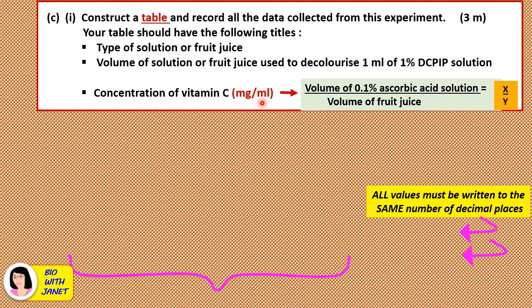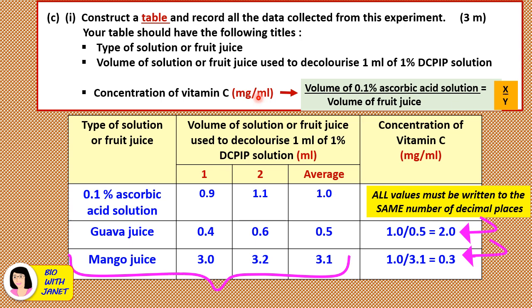The table has three main sections arranged left to right: type of solution or fruit juice (your MV), volume of solution or fruit juice used (your sub-RV, divided into first reading, second reading, and average), and concentration of vitamin C (your main or final RV) on the right. All titles should include units. Pause the video, draw the table yourself — practice makes perfect. Don't just copy the answer; train your brain to draw the table first.